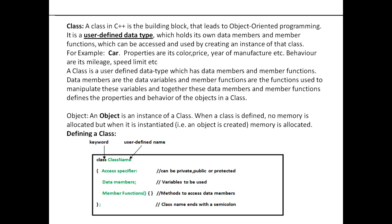A class in C++ is a building block used for object oriented programming. As I said, it is a user defined data type. I'll give you some real-life examples of a class.